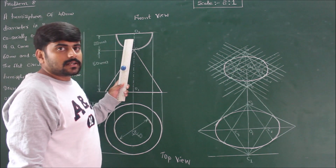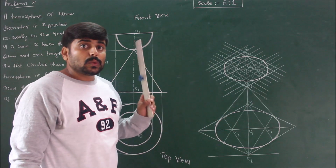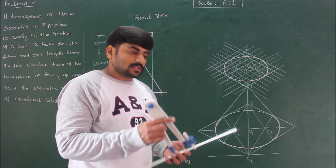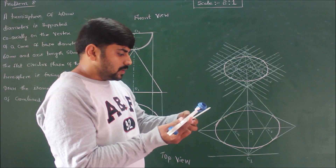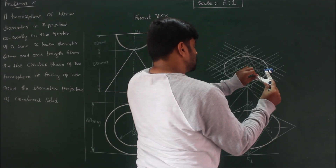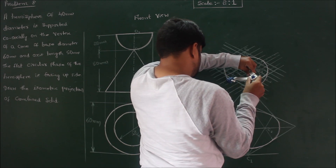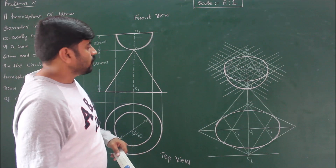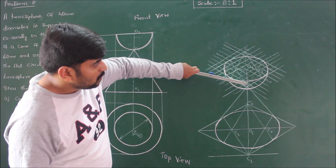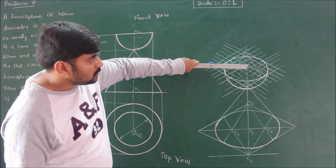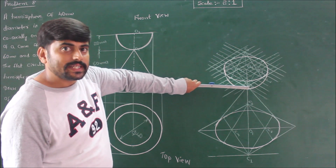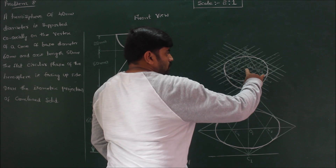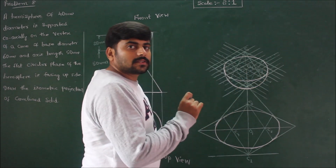To complete the hemisphere, construct a semicircle to the true radius. Since the true radius is 20 mm, do not choose two boxes — choose two centimeters of true radius. Keeping at center C3, draw the semicircle. This completes the isometric projection of the hemisphere of diameter 40 mm. Note: O3 to O2 is an iso-radius of 20 mm (two boxes), whereas O3 to the circumference is the true radius of 20 mm, not two boxes.